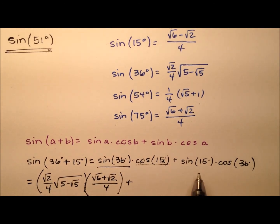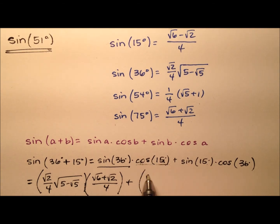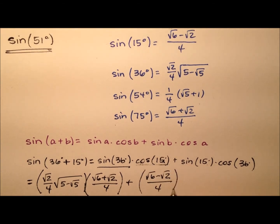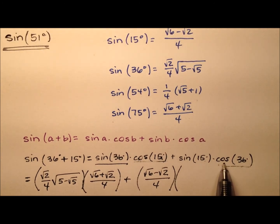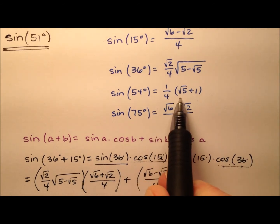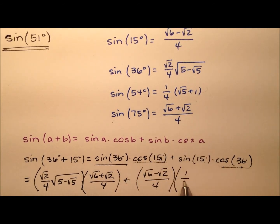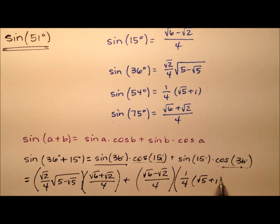And to that we're going to add the sine of 15 degrees, which is the square root of 6 minus the square root of 2, all over 4, and then times the cosine of 36 degrees. Once again we'll use its sine counterpart — the sine of 54 degrees — which gives us one-fourth times the quantity: the square root of 5 plus 1.